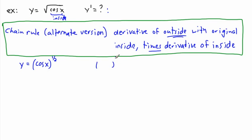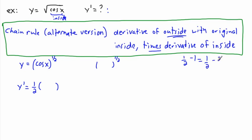Now this is more calculus-friendly. We have junk to the power of one half as the outside function, and cos x as the inside. The derivative of junk to the one half: the one half comes in front, giving junk to the power of one half minus one. One half minus one equals one half minus two halves, which is negative one half.